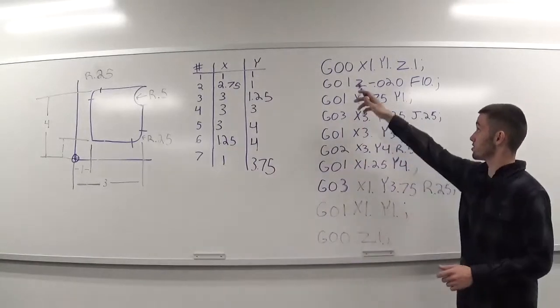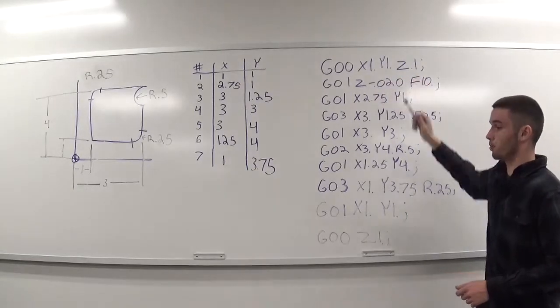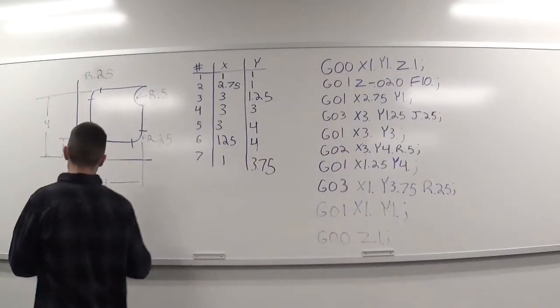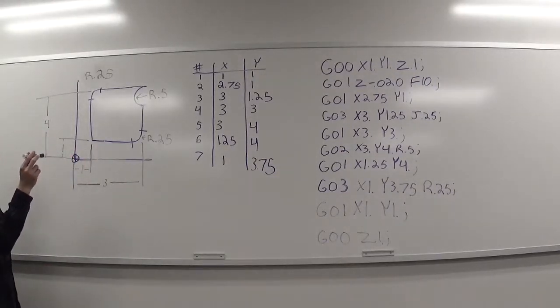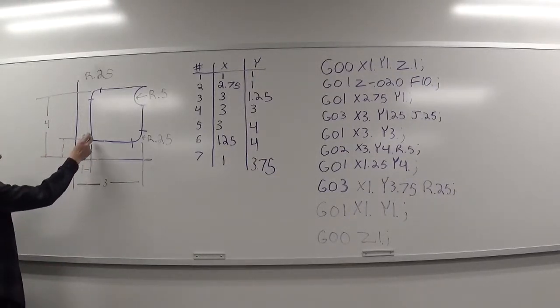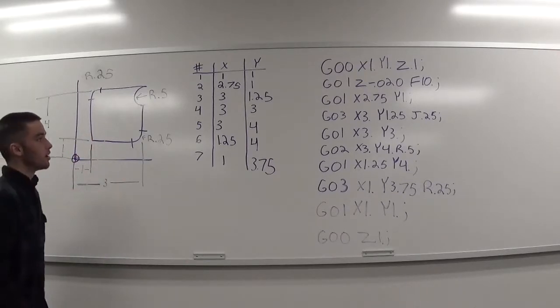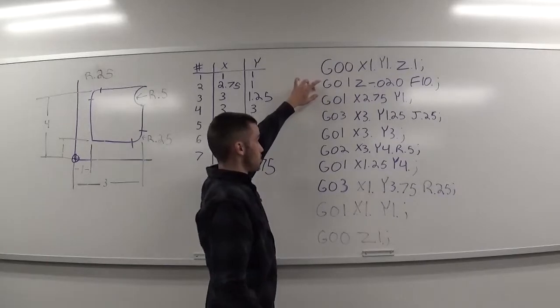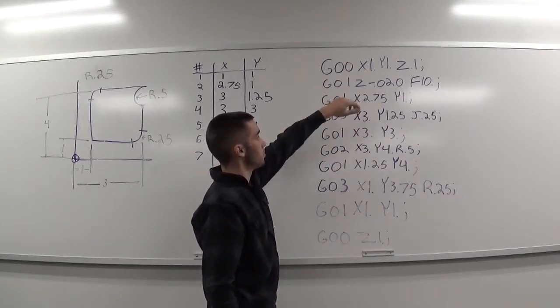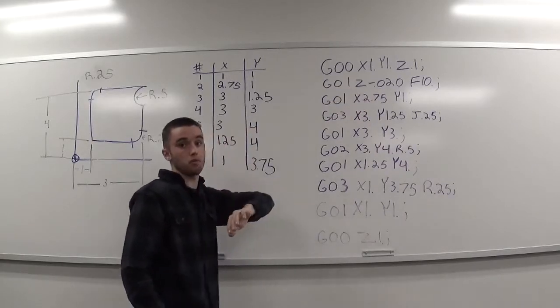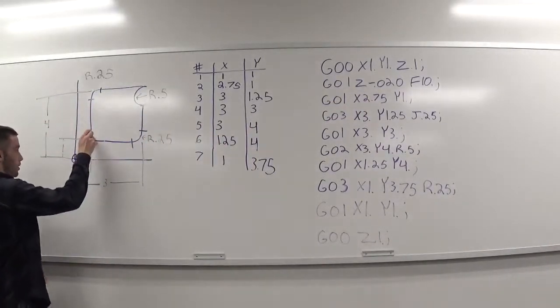So, we have G00, your rapid movement, to an x of 1, y of 1, and z of 0.1. This marker will be my tool. So, we're out here going over to an x of 1, y of 1, and z of 0.1, leaving us 100,000 above the part. If we go to G01, it's our controlled straight line movement, taking us out of G00. We'll be moving in the z direction, negative 20,000 at a feed rate of 10 inches per minute. So, now we are actually into our work piece.